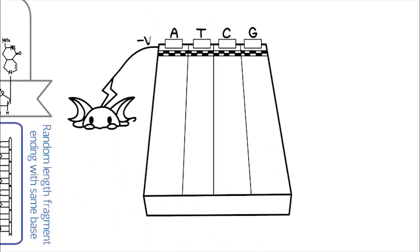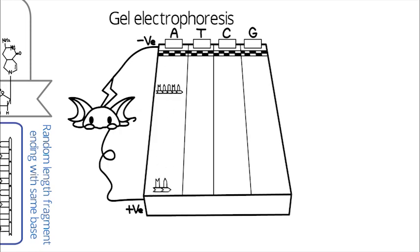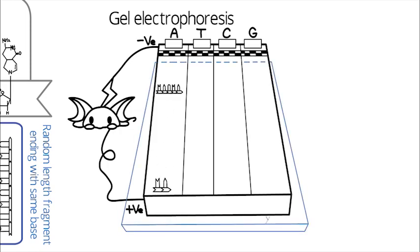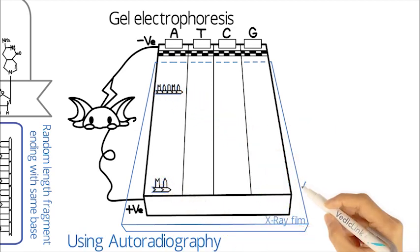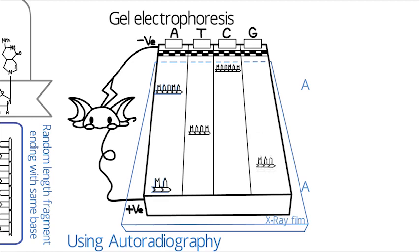Finally, the fragments are analysed by gel electrophoresis, which separates the fragments according to length, and then visualised on X-ray film using autoradiography. Through this, we know the exact location of each base, A, on the DNA sequence. Repeat with all 4 DDNTP types, that is T, C and G, and we then get the exact DNA sequence.